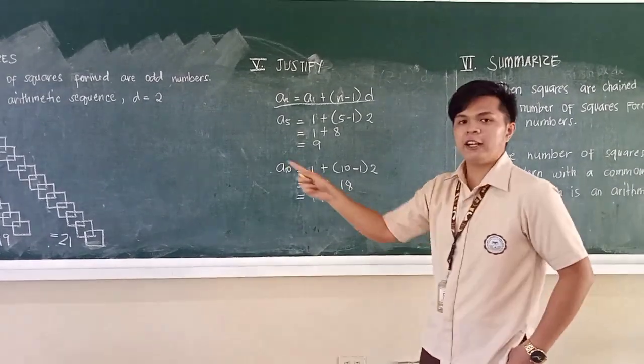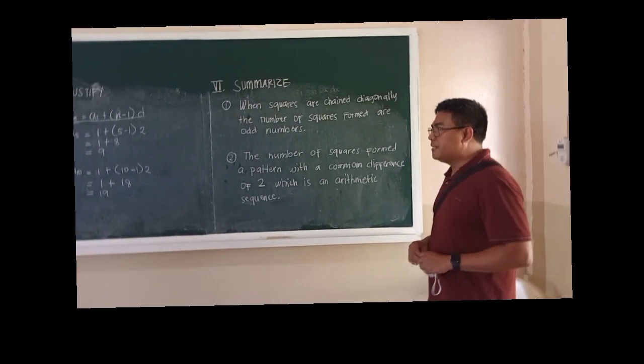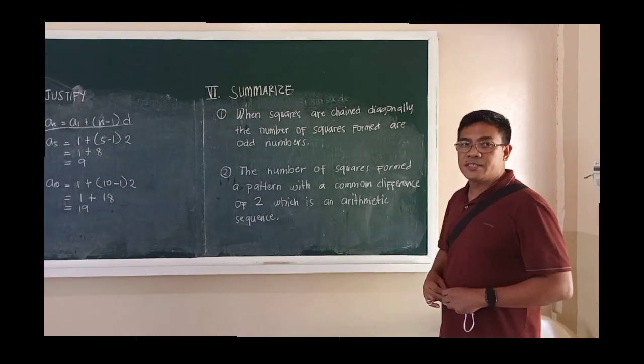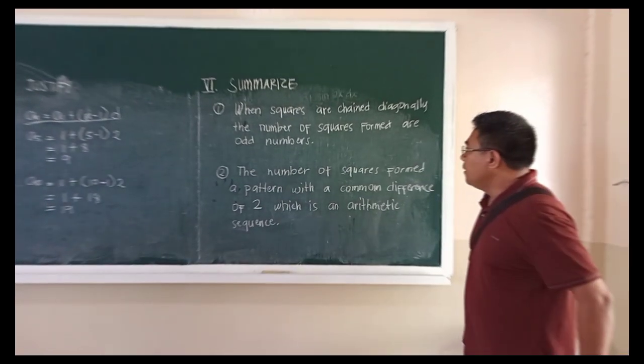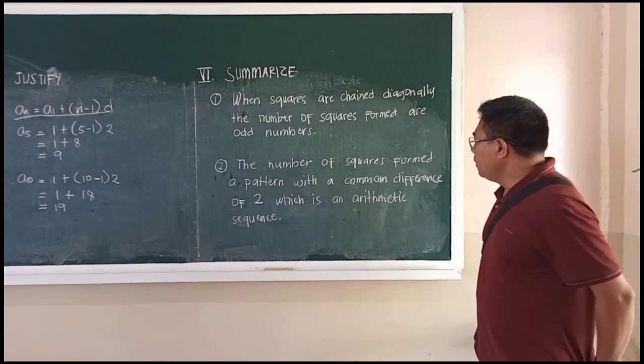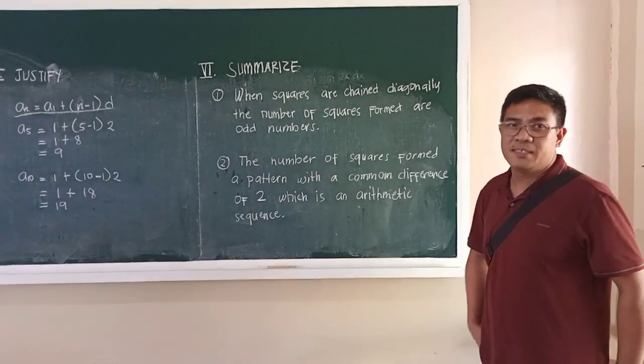So after gathering the data, then analyze it through conjectures, verify its validity and justify it using the formula. Here is the summary: Number one, when squares are chained diagonally, the number of squares formed are odd numbers. Second, the number of squares formed a pattern with a common difference of two, which is an arithmetic sequence.